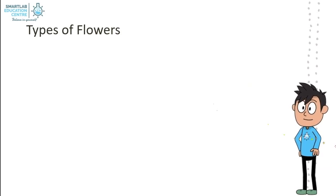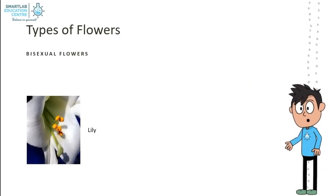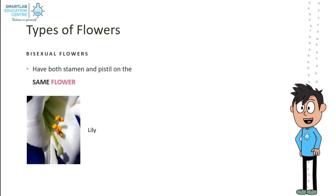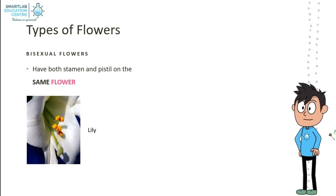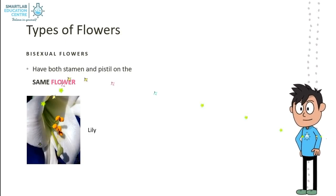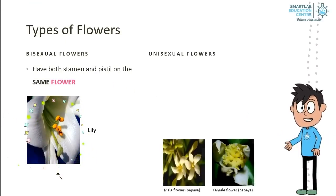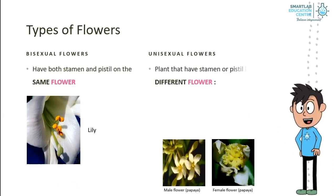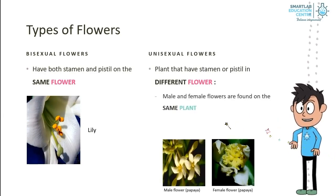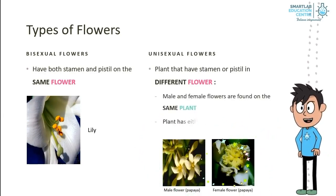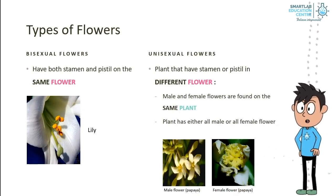Types of flowers. Bisexual flowers have both stamen and pistil on the same flower, for example, lilies. Unisexual flowers are found on plants that have stamen or pistil in different flowers. The male and female flowers are either found on the same plant, or the plant has all male or all female flowers.